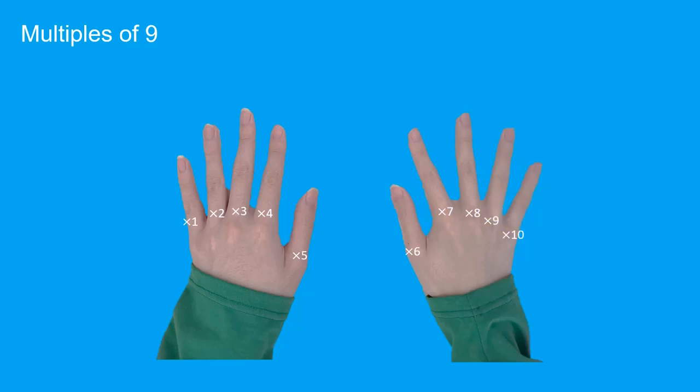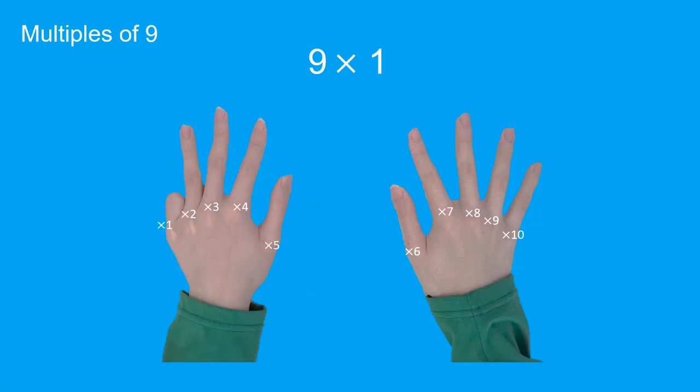When we read each line, we close the correct finger only. So nine times one means we close the times one finger only. Our hands show nine fingers, which is the correct answer.